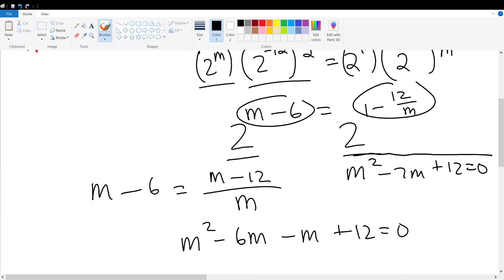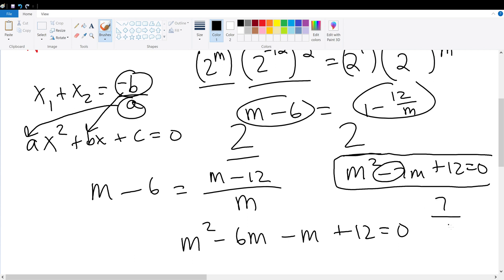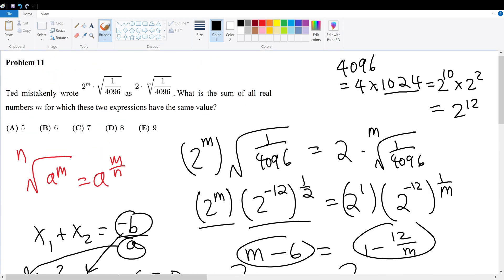Now by Vieta's formula which basically relates the roots together it says that for a quadratic equation the sum of the two roots must equal the negative b over a. Negative b being the coefficient of ax squared plus bx plus c is equal to 0. So the b is this b right here and the a is this a right here. So in this case the b is negative 7. So b of negative 7 of negative is 7 divided by a which is 1 gives 7. So our final answer is 7 because that's the sum of all the roots which are m. Therefore your answer choice is answer choice C.